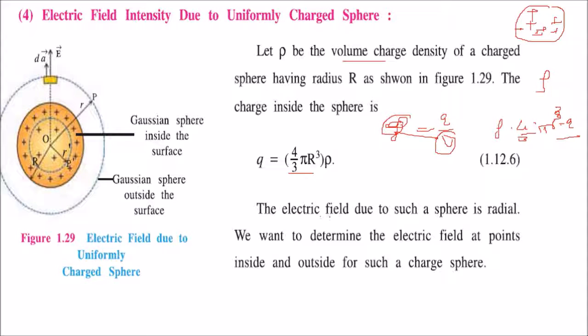The electric field due to such a sphere will always be radial, going outward radially. We need to determine the electric field at points inside and outside the charged sphere.